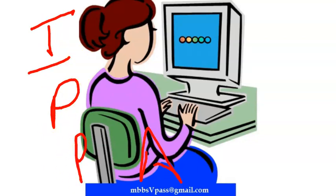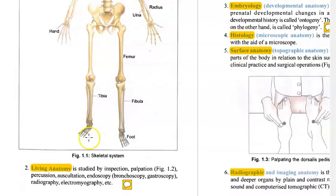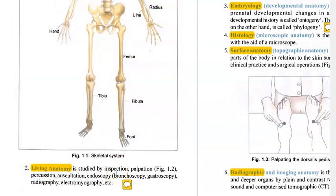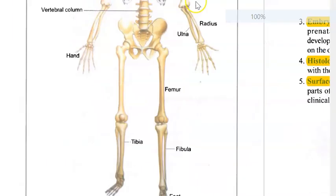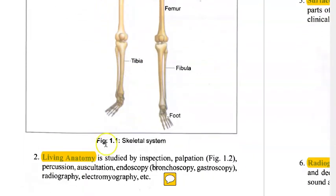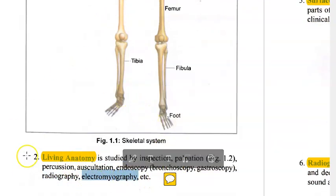You will also percuss and auscultate. Using a stethoscope on a living person, you can learn the anatomy. You can also do endoscopy, bronchoscopy, gastroscopy, take X-rays, and electromyography for muscles.